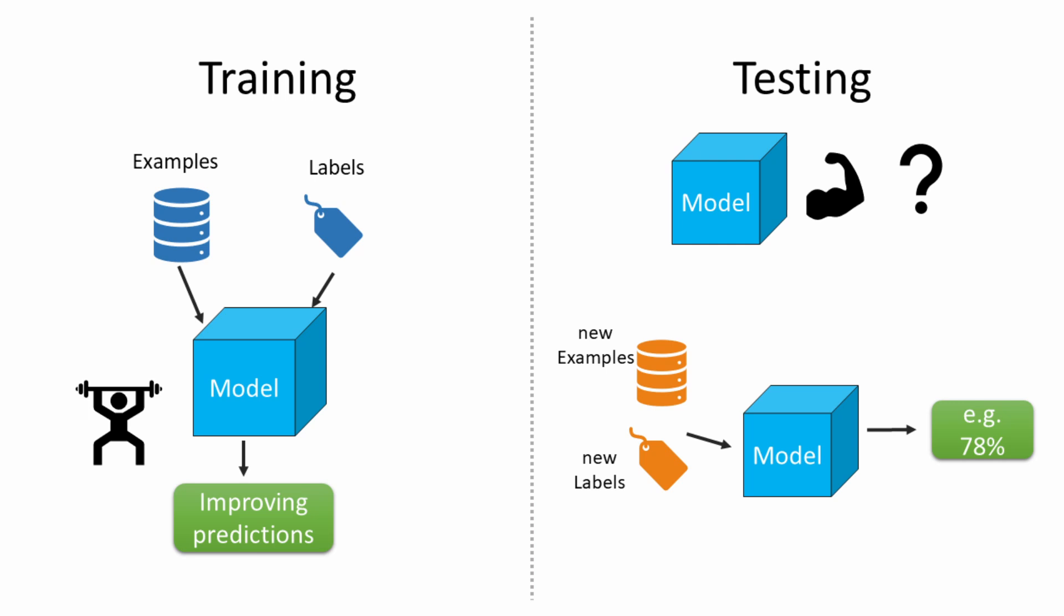During training you show some examples to your model to let it learn and improve on these examples but you keep some data separate for testing to find out how good your model would be on unseen data like it would encounter in the wild in production if it's live.